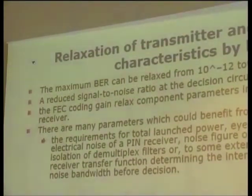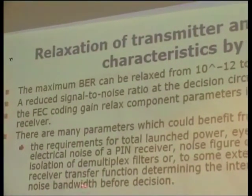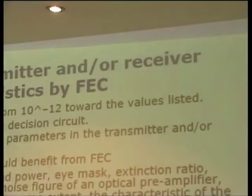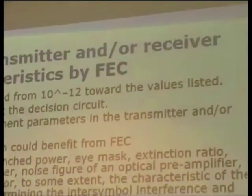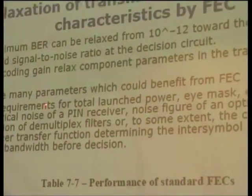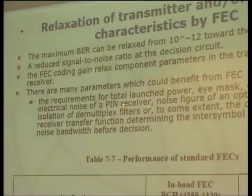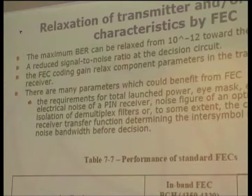In-band and out-of-band FEC are used for SDH and OTN. The in-band FEC coding gain is 3.8 dB, and the net coding gain is the same as the coding gain. For out-of-band FEC, the coding gain is 5.9 dB, but the net coding gain is slightly smaller because the code rate is 239/255. Such FEC effects reduce the required component parameters of transmitter and receiver. There are many parameters that could benefit from forward error correction, as described in Chapter 6.